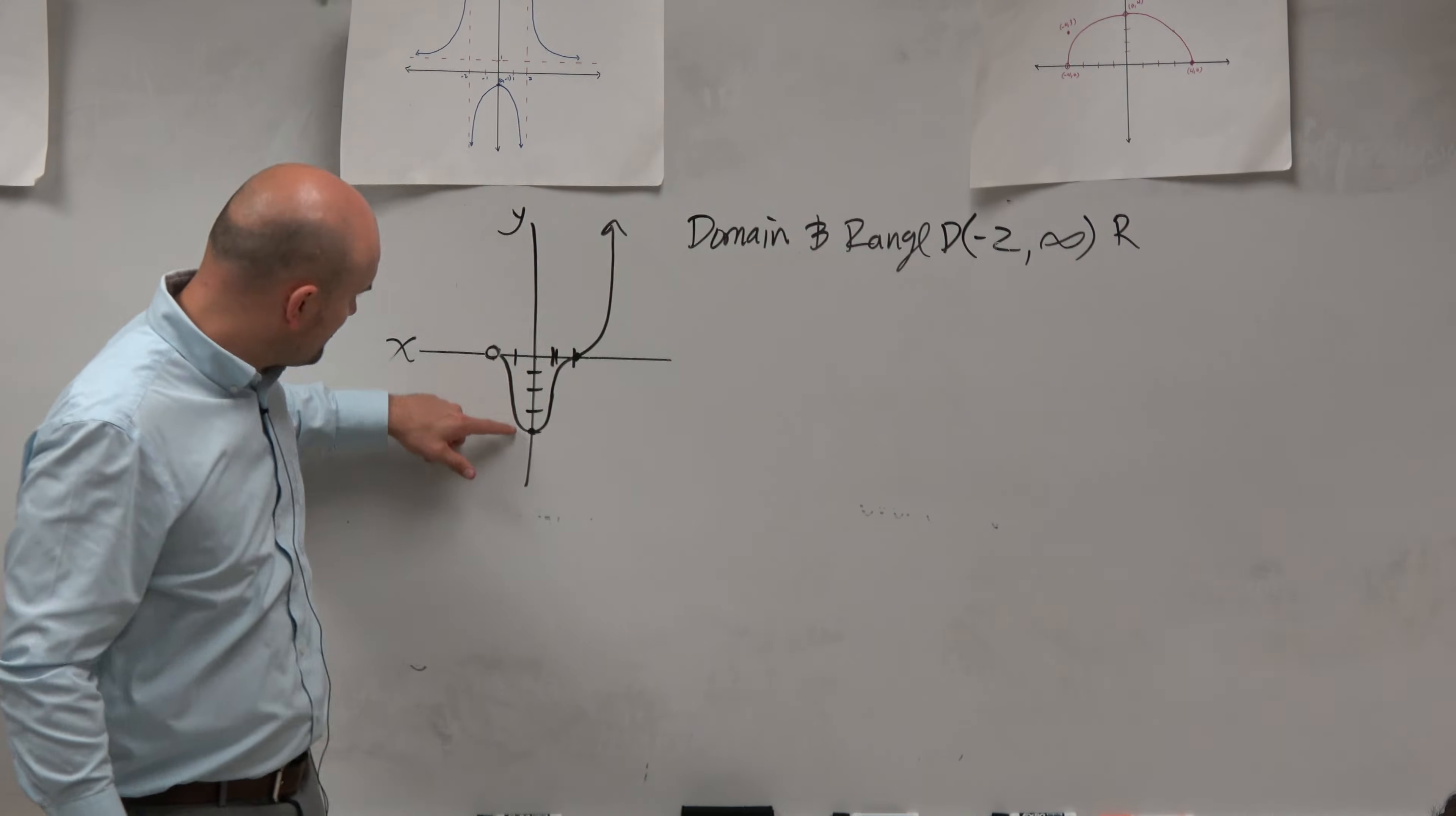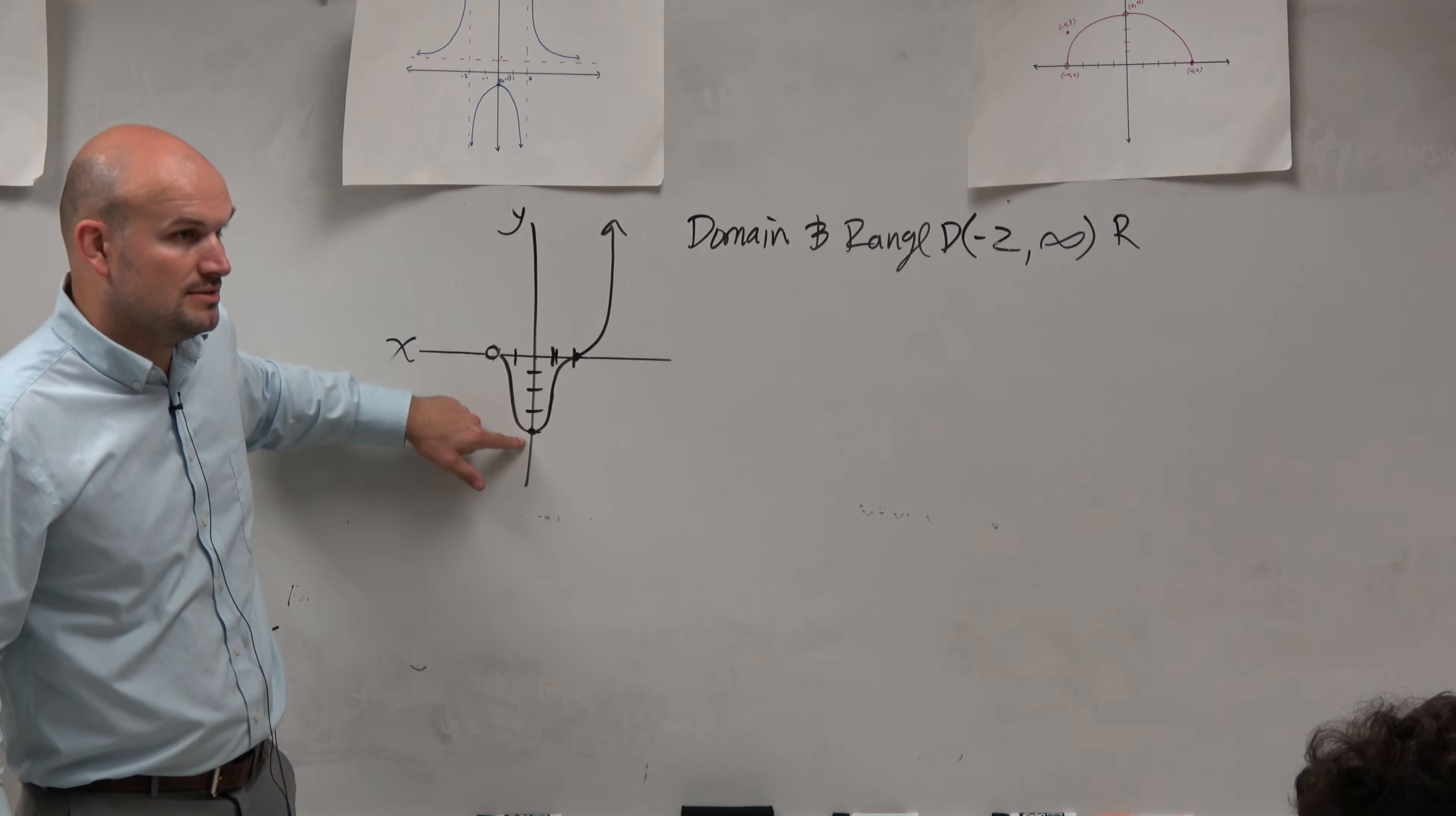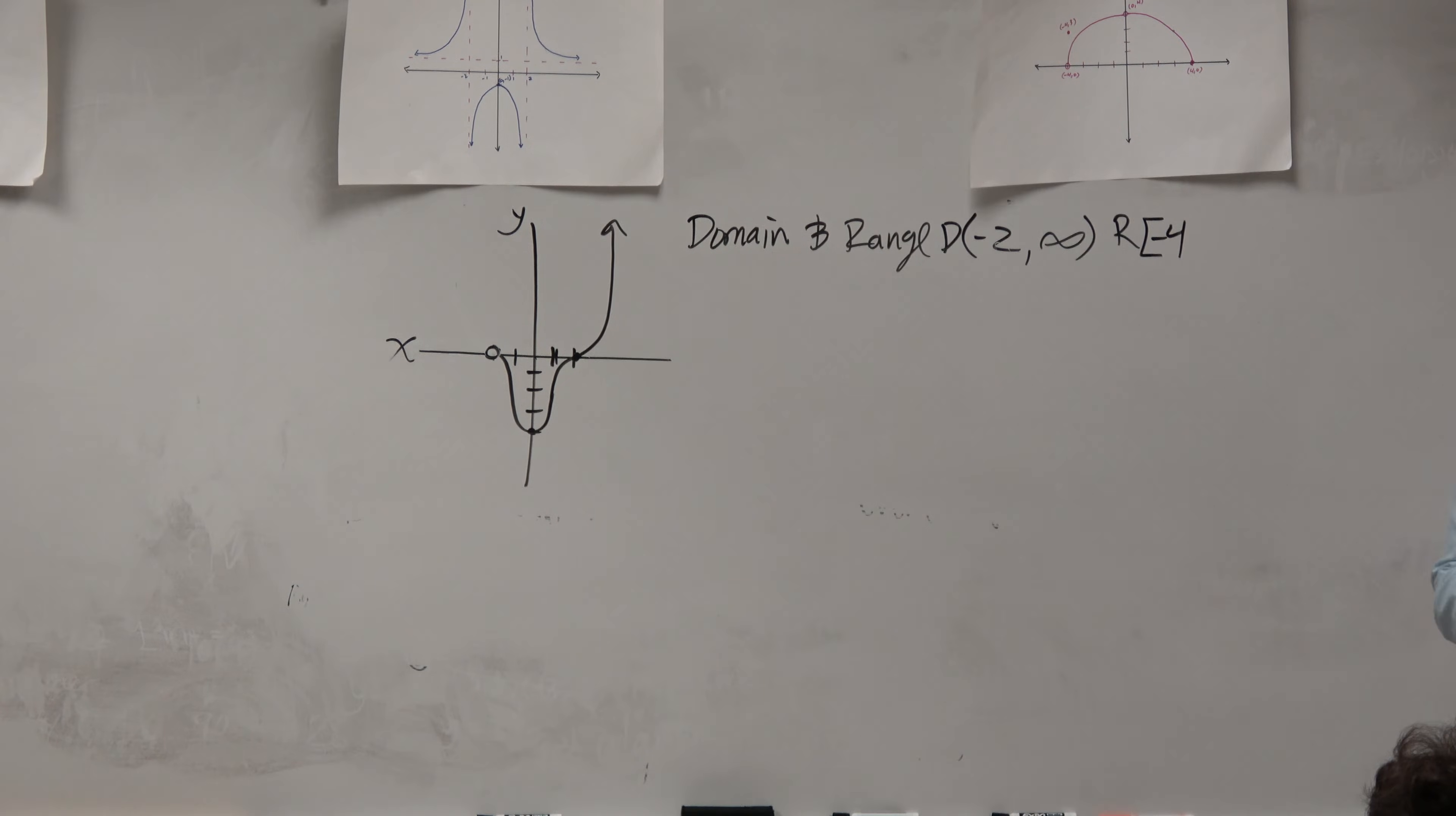And you can see that this graph goes all the way down to negative 4. And does it include y equals negative 4? Yes. So therefore, since negative 4 is included as a y value, we're going to use a bracket.